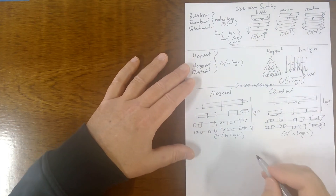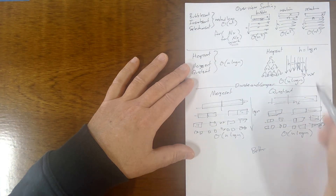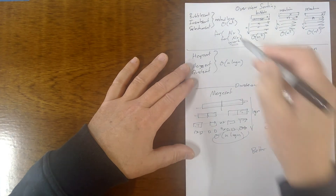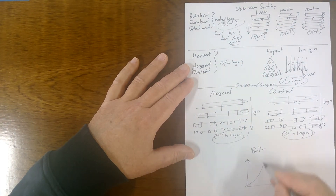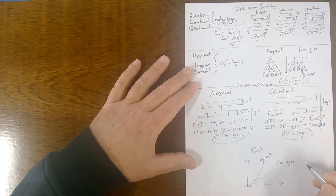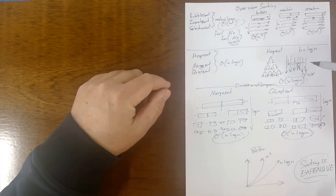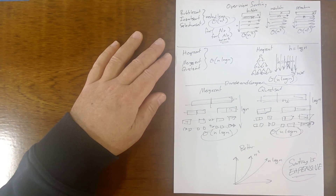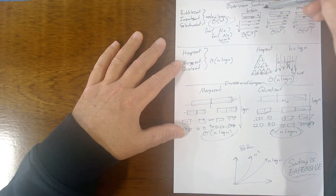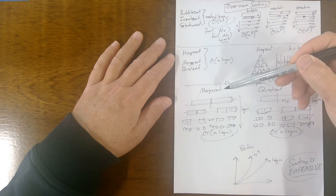Is n log n a lot better than n²? Well, if you graph them, n² grows much faster, and n log n is better, but not dramatically so. So that's about the best we can do. The moral is: sorting is expensive. You want to try and avoid sorting if you can, but sometimes you have to. That's an overview of the different sorting algorithms we'll look at in this class and how their time complexities compare. I'll do specific examples for heap sort, merge sort, and quick sort.